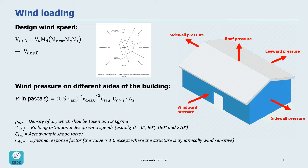The formula also includes V_design and theta, which we have explained before, and Cfig, which is the aerodynamic shape factor, which we are going to cover in a lot of detail in the next few slides. Then there is C_dynamic, which is the dynamic response factor, which is usually 1, except where the structure is dynamically wind sensitive — usually the case for very tall buildings.